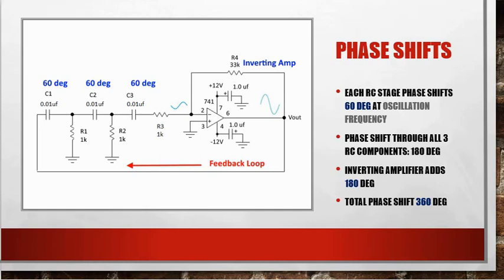There's phase shifts through each RC stage, and it's roughly 60 degrees at each oscillation frequency. The phase shift through all three of these stages adds up to 180 degrees. We have an inverting amp, and the inverting amp, because it inverts, is 180 degrees out of phase, and now we're back to our 360.